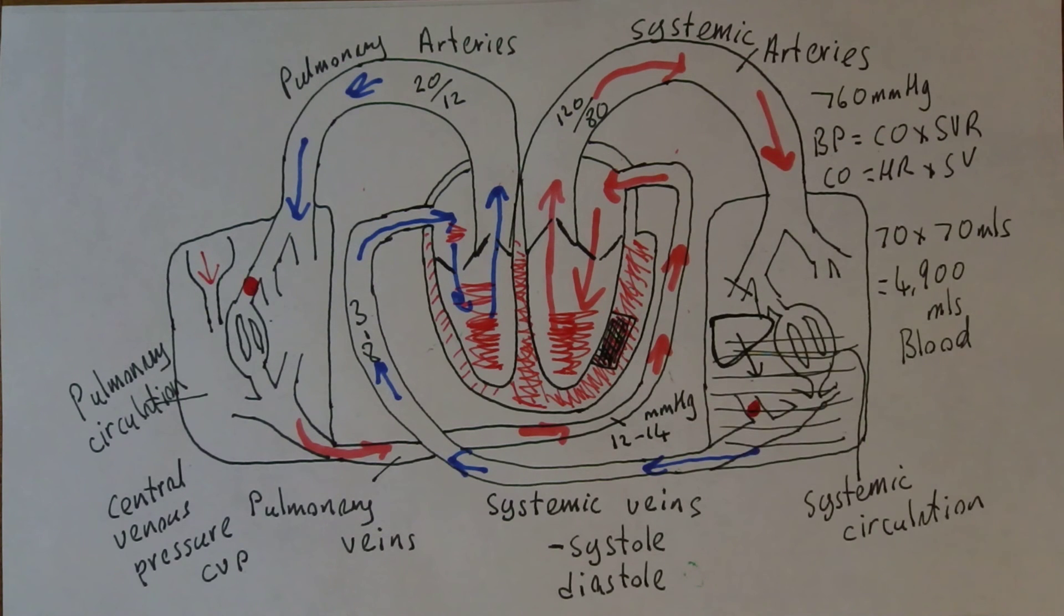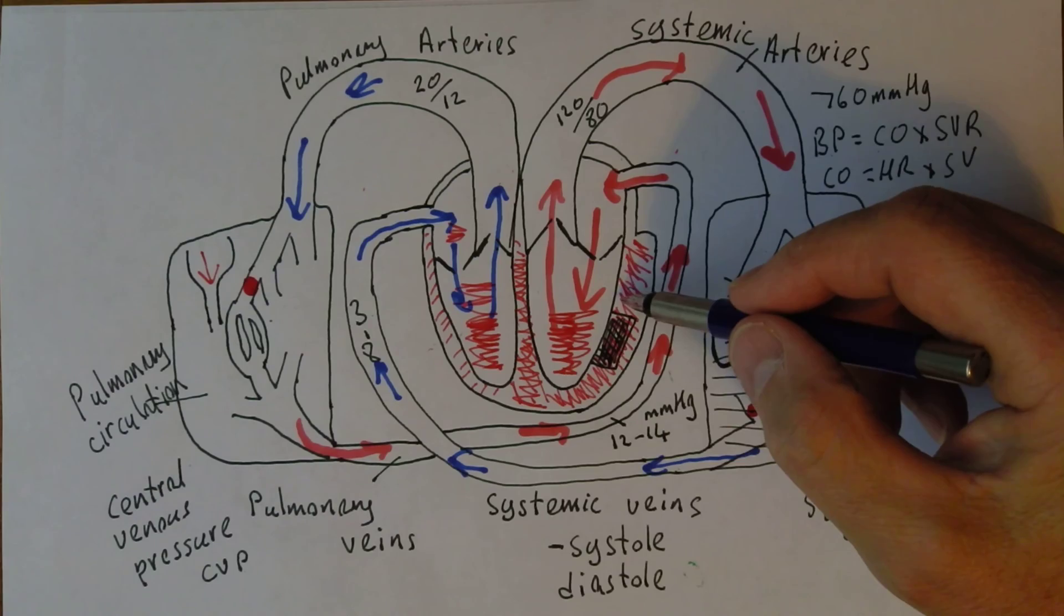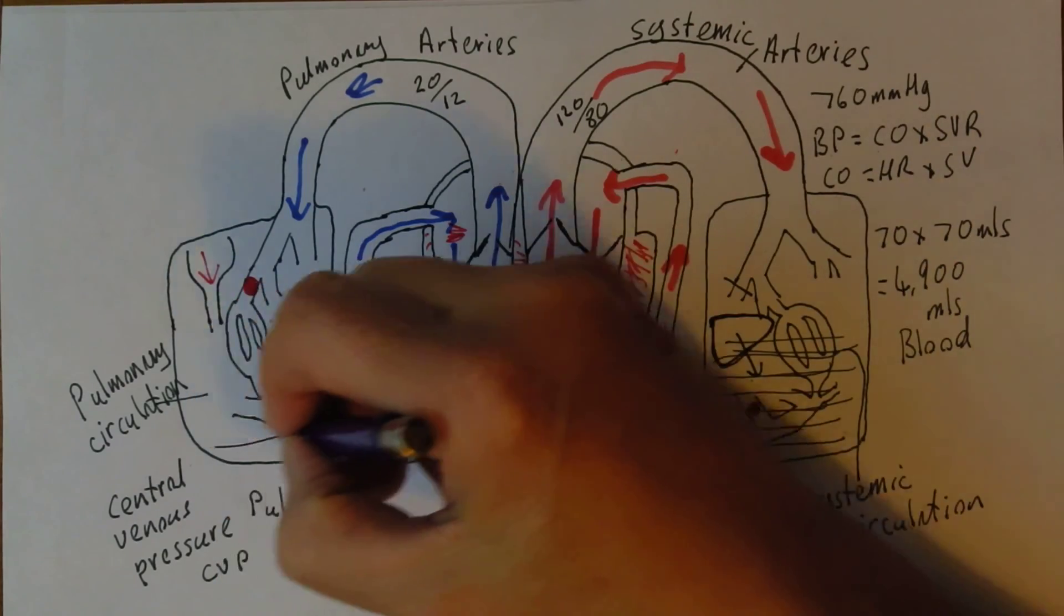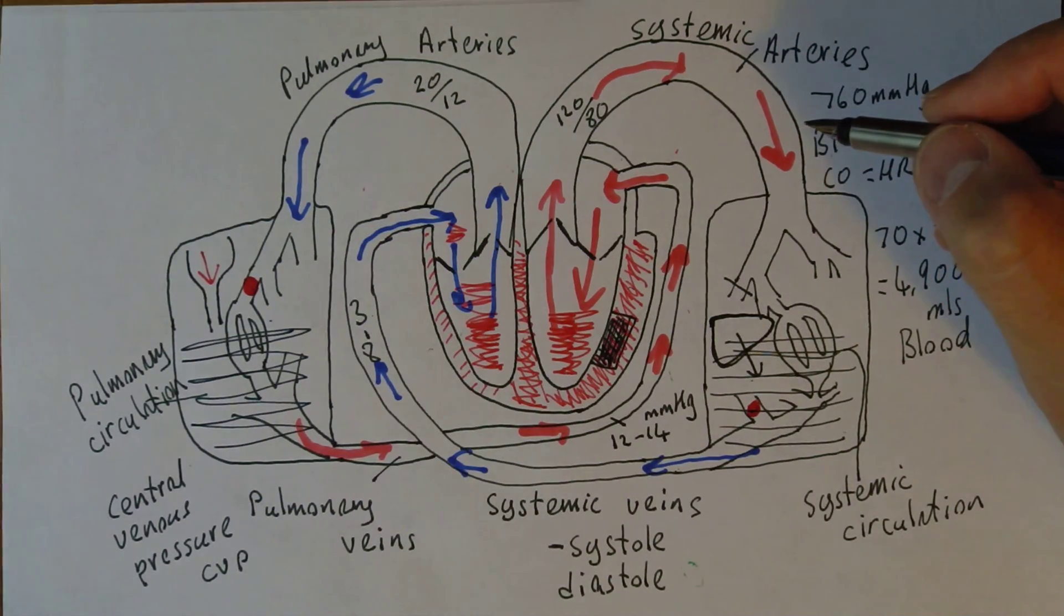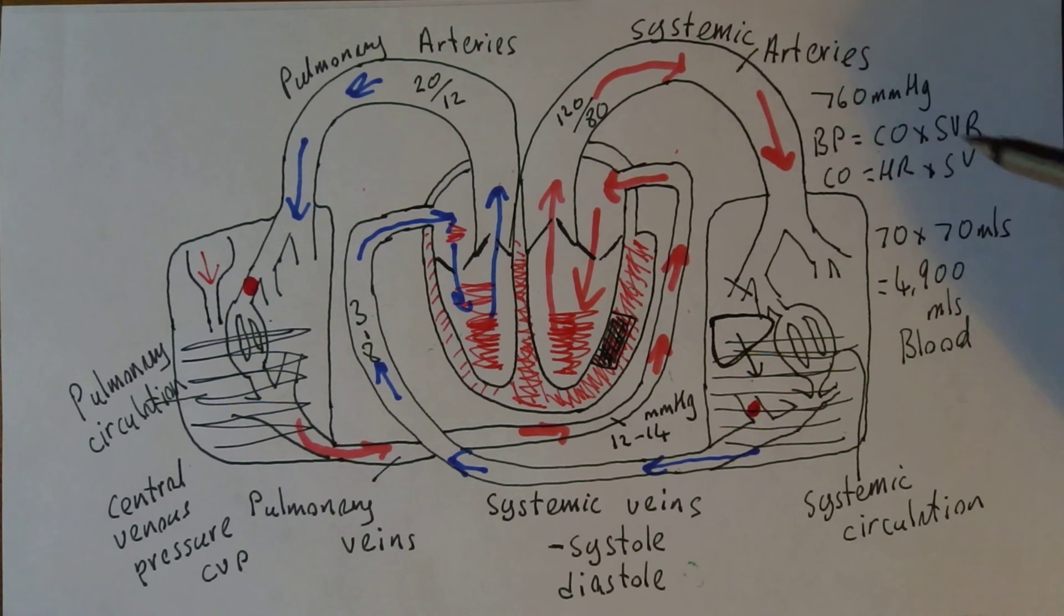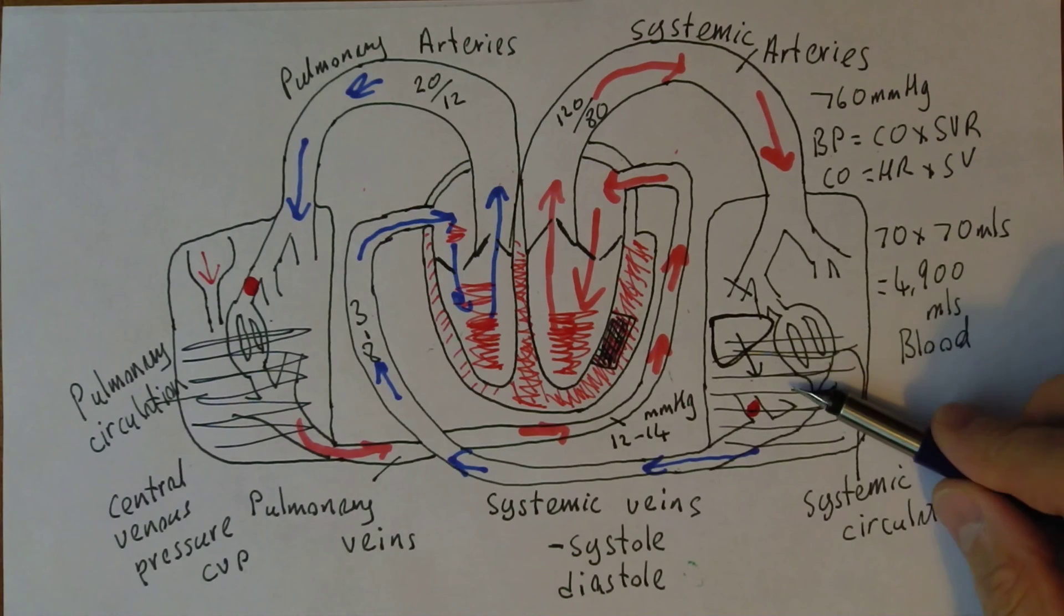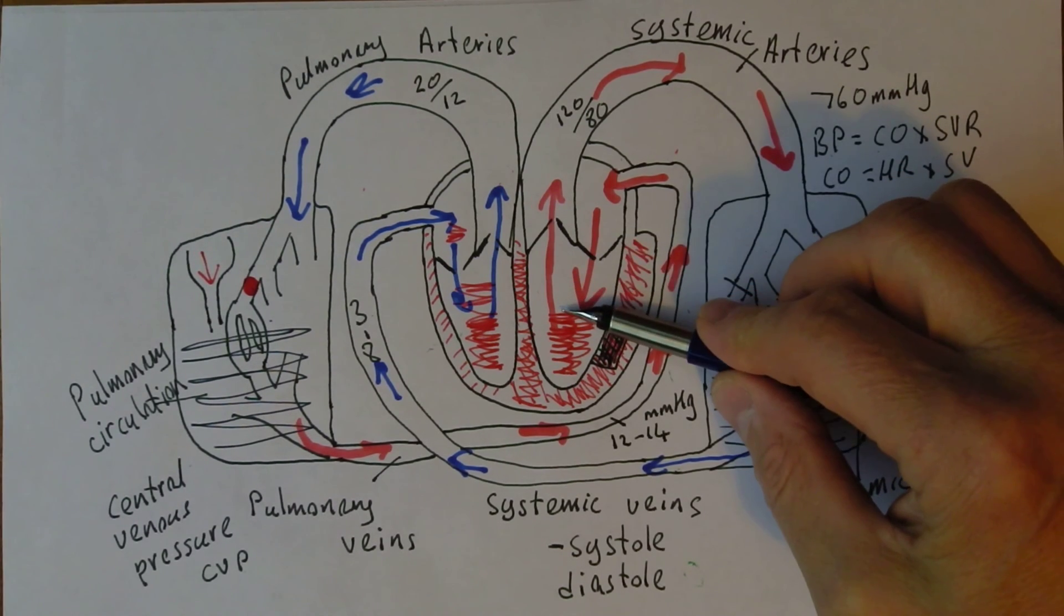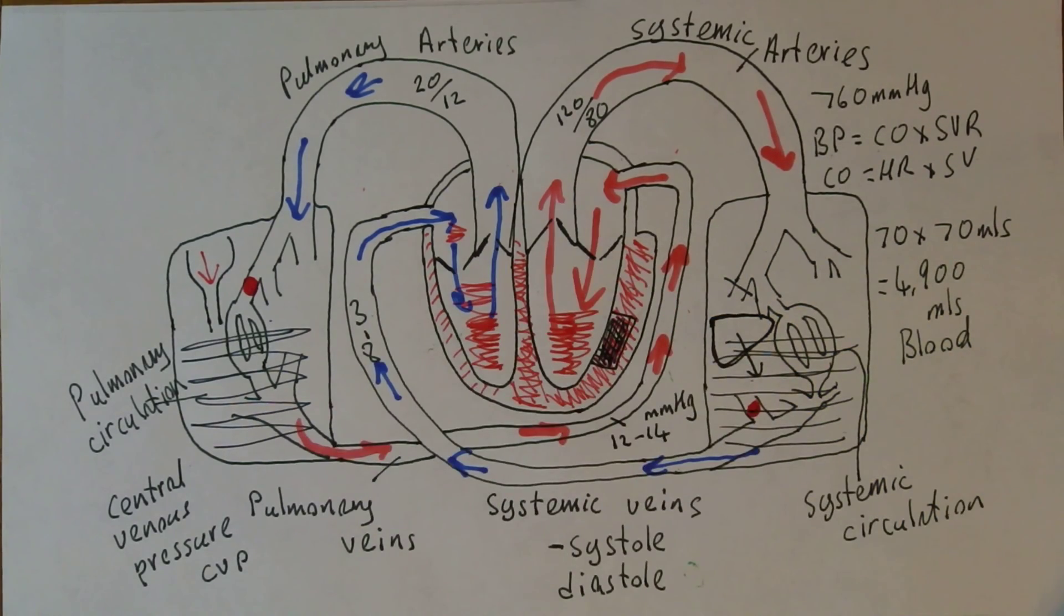So the pulmonary edema is caused by the left ventricular failure because the blood can't drain back. Now over time the left ventricular failure will also lead to right ventricular failure. So we get a combined cardiac failure. But this diagram explains perfectly why the right ventricular failure is going to dam back causing the systemic edema, while the left ventricular failure is going to dam back causing pulmonary edema, whether that be acute or chronic.